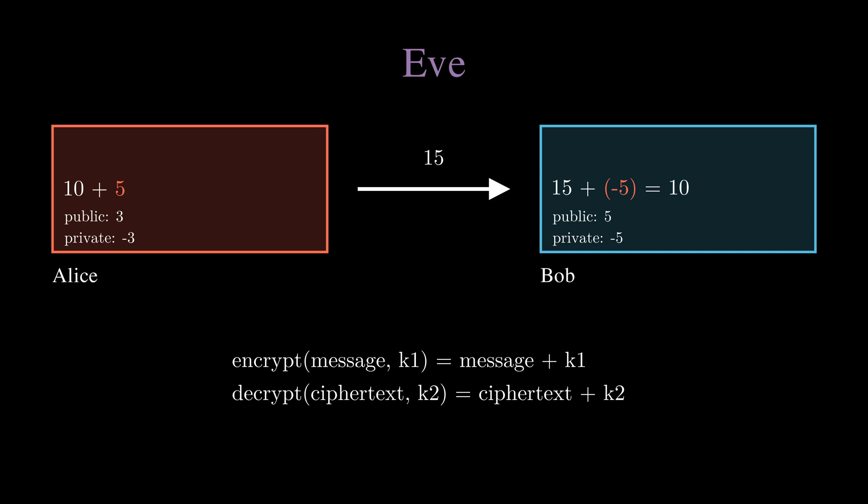With this system, it's straightforward to find the private key, simply negating the public key, but in reality it would be practically impossible to find.